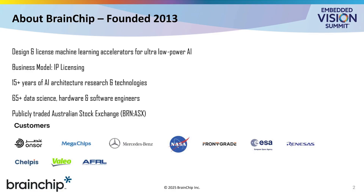A little bit about Brainship. We're founded upon the idea that we can look at biological systems, at the human brain, as inspiration as to how we can build computational devices which can be very low power. With only 24 watts, you can get an Einstein, an Isaac Newton, a Michael Jordan. So what is it about the brain and the way computation is done in the brain that allows us to achieve such low power?